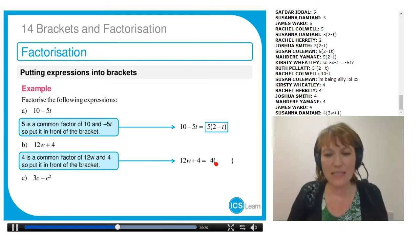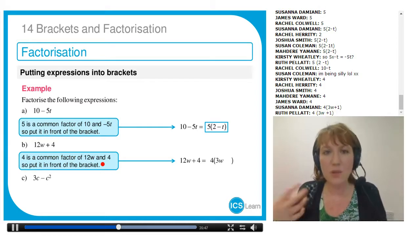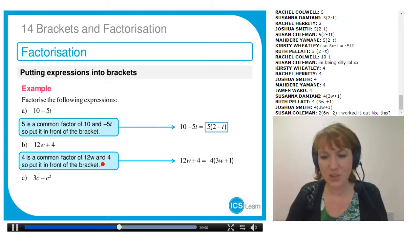Then we ask ourselves, what do I need to multiply 4 by to get 12w? Well, 4 times 3 is 12, and then we've got the w. So to get the 12w, we need to multiply by 3w. And what do I multiply 4 by to get plus 4? Well, 4 needs to be multiplied by 1. In this case, we need the 1. There's no letter there, so I have to write the 1. Perfect. Everyone that's written the answer has got it right.